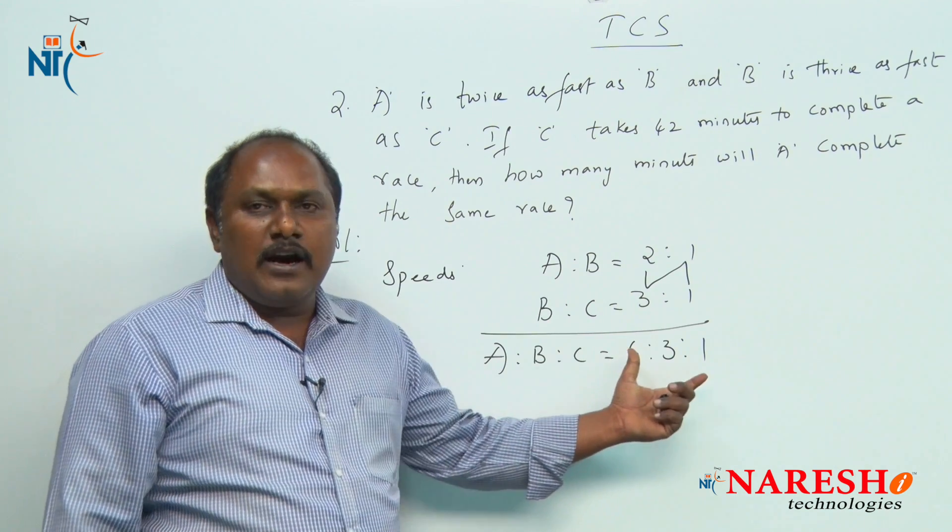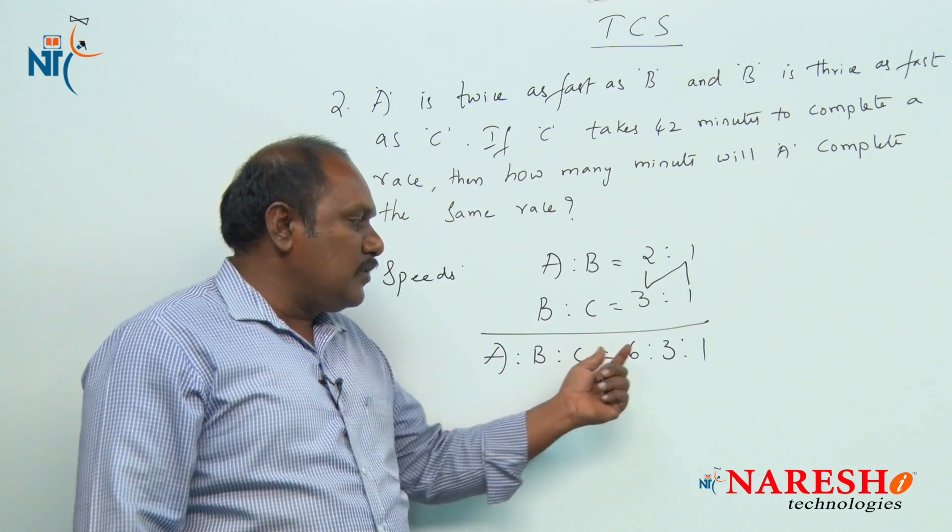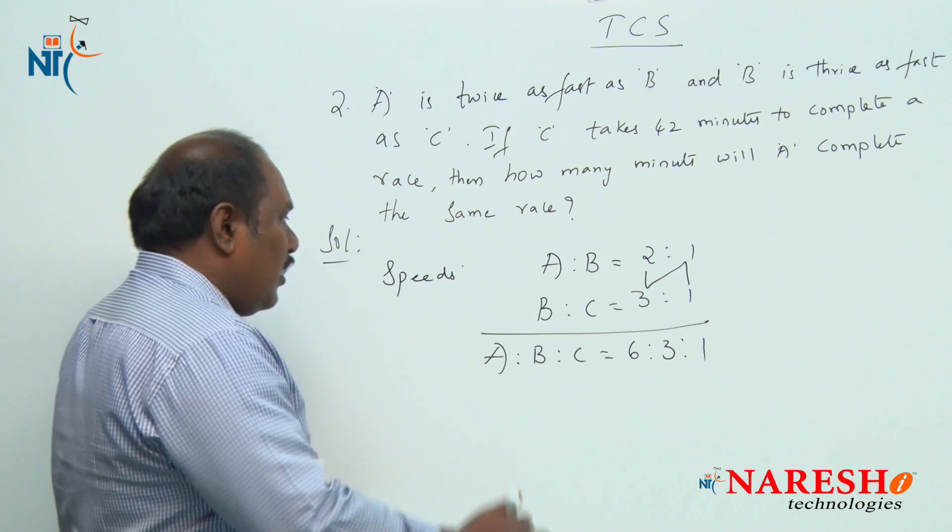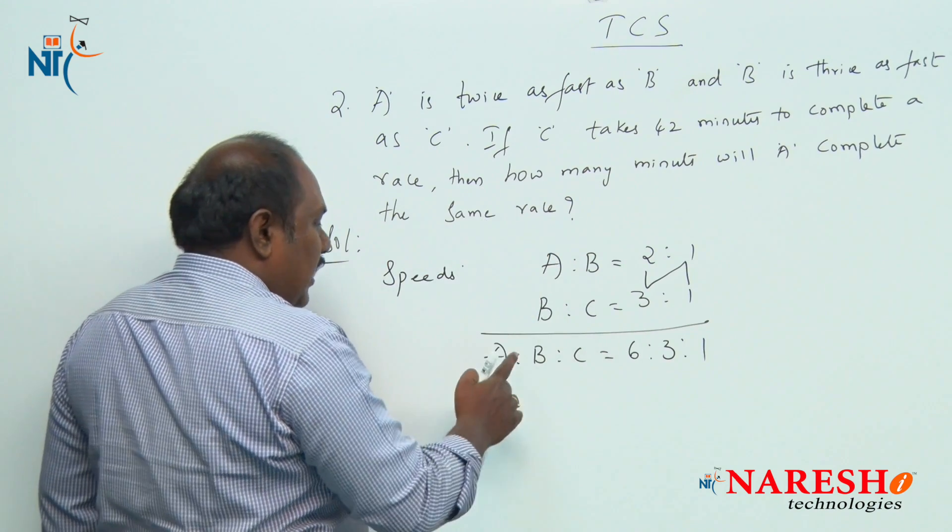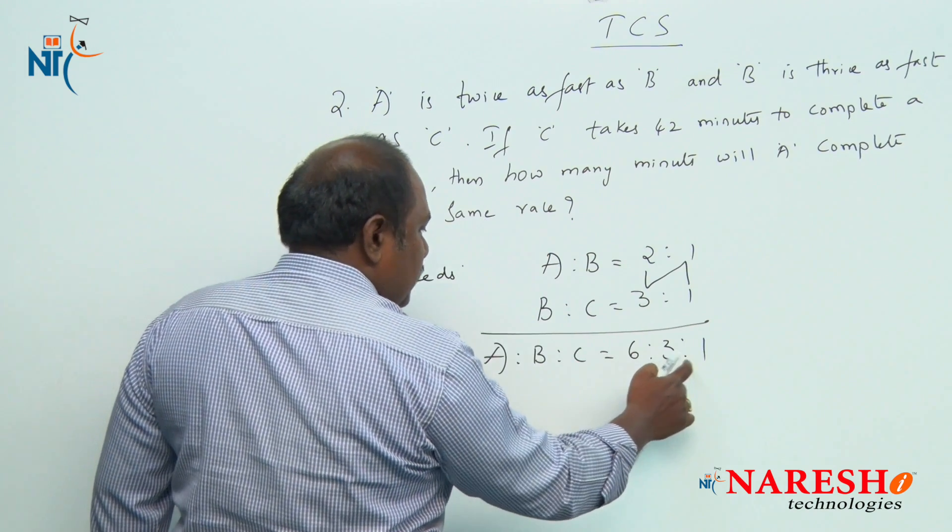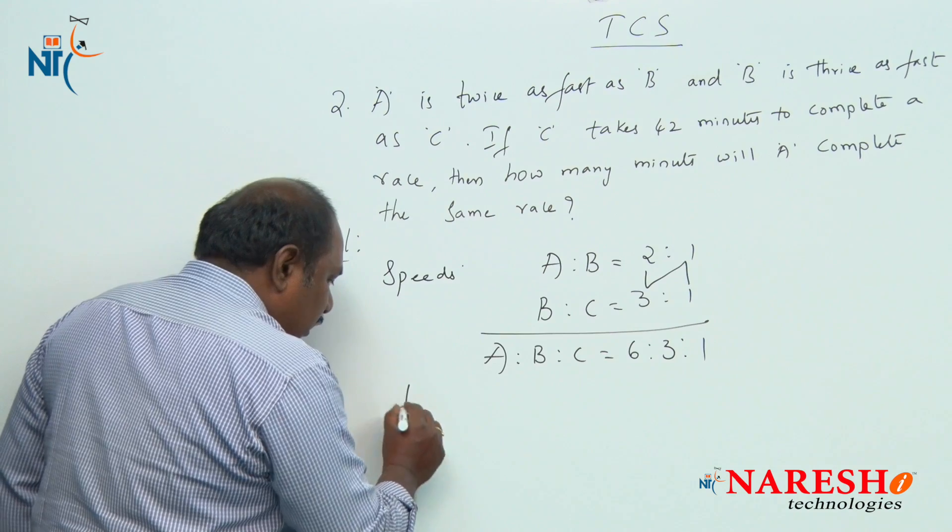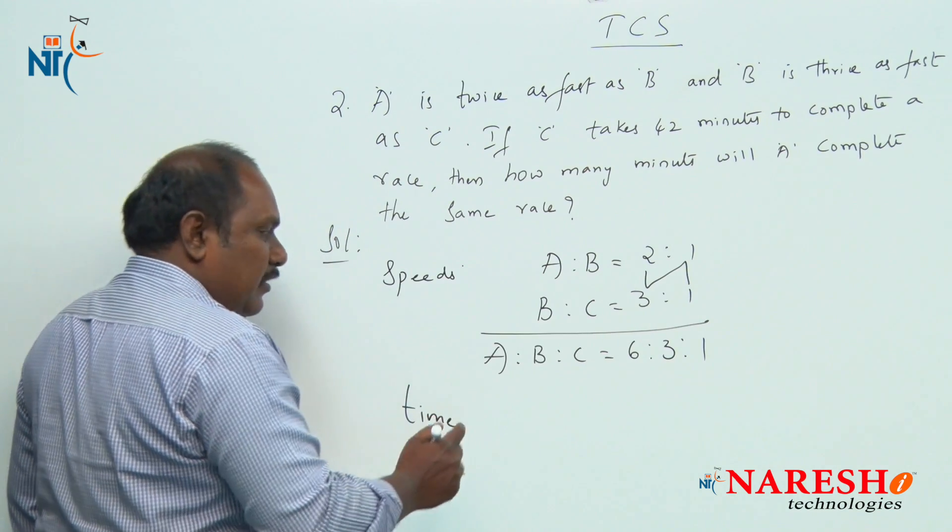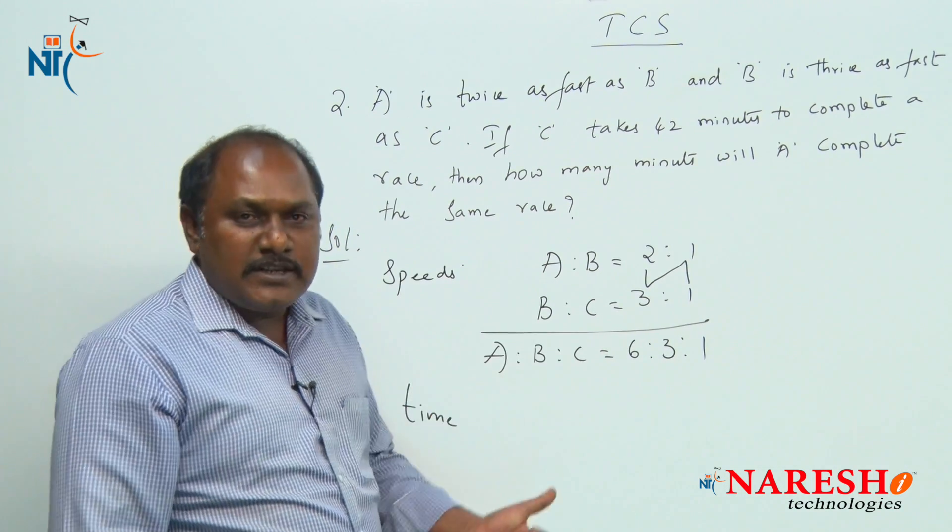So the speeds of A, B and C are in the ratio of 6 is to 3 is to 1. When distance is constant and speeds are in the ratio of 6 is to 3 is to 1, definitely the time taken by A, B and C should be in the inverse ratio.